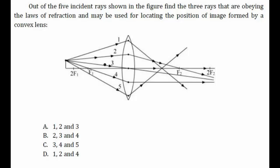For the fourth ray, we can see that it passes through the first focus of the lens and after passing through the lens it emerges parallel to the principal axis. As we know, a ray passing through the first focus goes parallel to the principal axis after refraction, so the fourth incident ray is also correct.